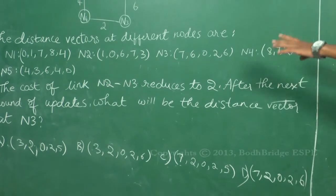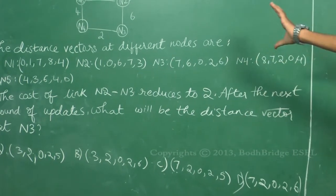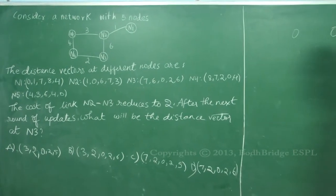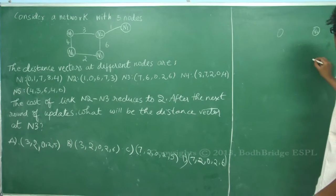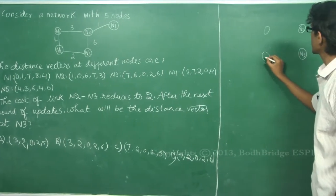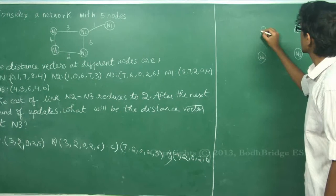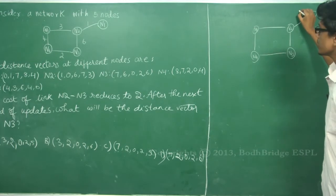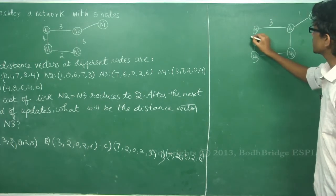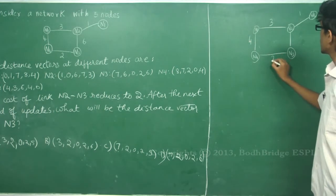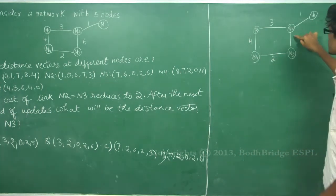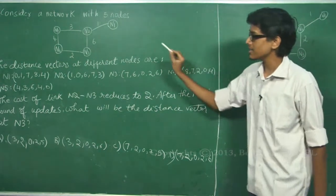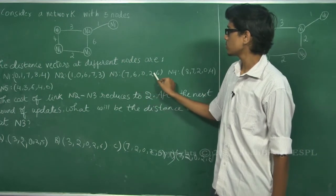In the given graph, the distance between N2 and N3 reduces to 2 from 6. So the graph will have nodes N1, N2, N3, N4 and N5. The other distances remain the same: 1, 3, 4, and 2. The link between N2 and N3 is changed from 6 to 2. Initially, the distance vector at N3 was 7, 6, 0, 2, 6.